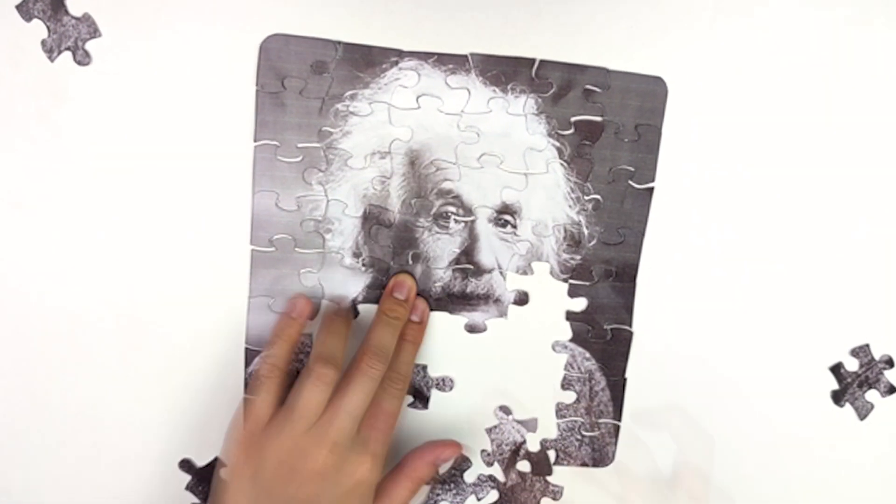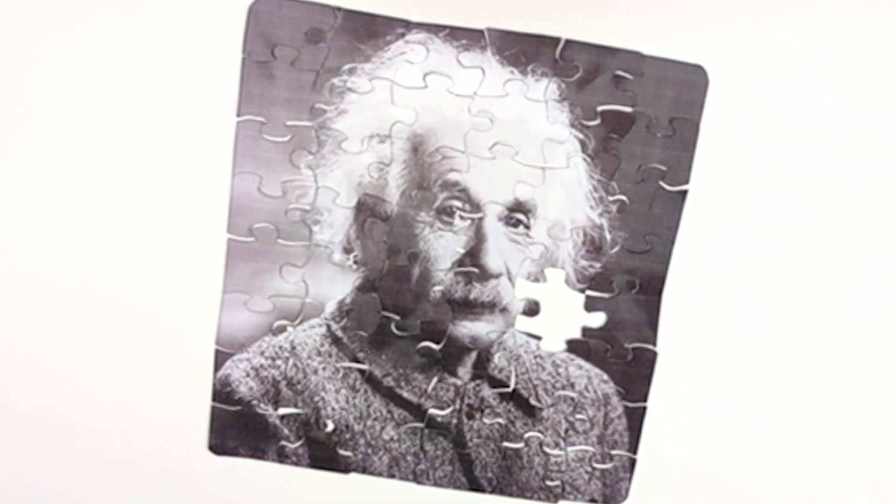As much as we all love Einstein, we know that his theory of general relativity is incomplete. But why?